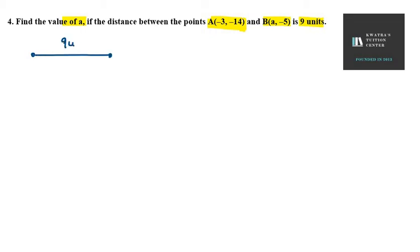So the distance is 9 units and this is my point A which is (-3, -14) and this is my point B which is (A, -5). So we basically need to find A.